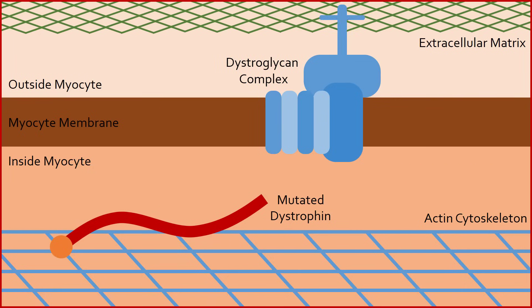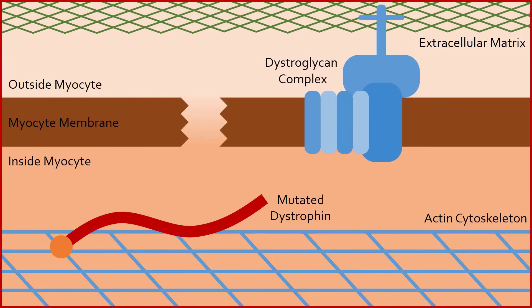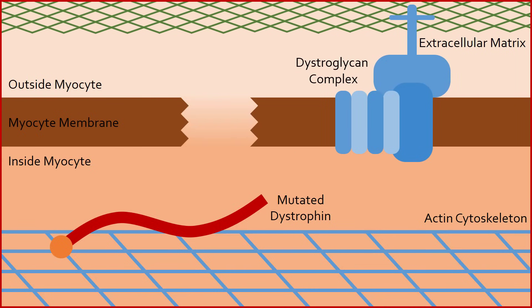In Duchenne muscular dystrophy, a genetic mutation causes dystrophin to be extremely short, often lacking the dystroglycan binding end, making it dysfunctional. Because of this, every time the muscle contracts, small rips appear in the membrane.